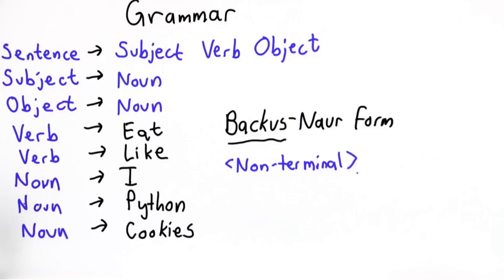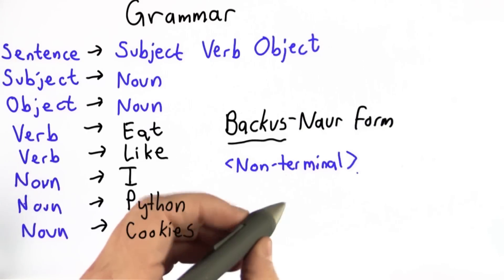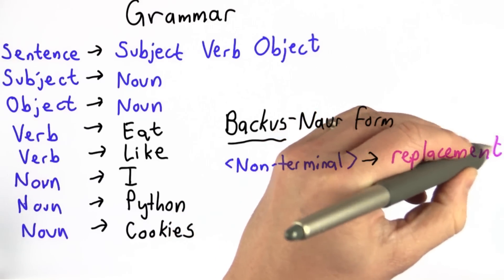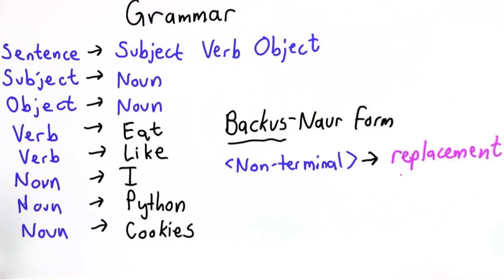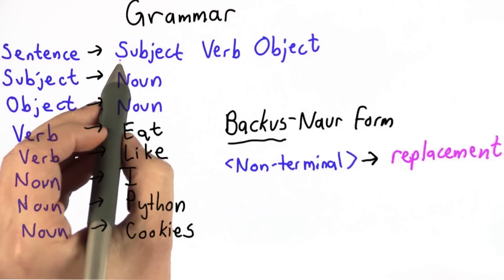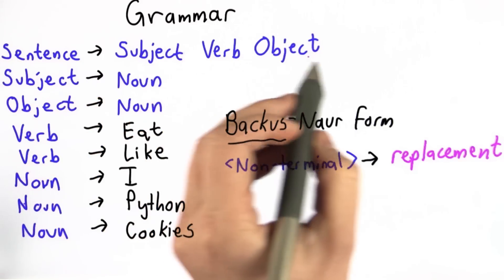I've just used blue to distinguish the non-terminals like this. Then there's an arrow, and then on the right side, there's a replacement. The replacement can be anything. It can be a sequence of non-terminals, like here, that sentence can be replaced with subject followed by verb followed by object.